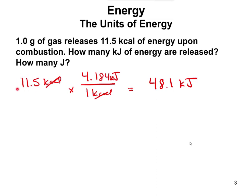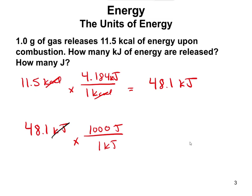The next question asks how many joules that is. We know 48.1 kilojoules and use the conversion that 1 kilojoule equals 1,000 joules. The kilojoule units cancel, and our final answer is 48,100 joules. These two numbers — 48.1 and 48,100 — are the same quantity; the only difference is the units: joules versus kilojoules.